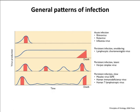Next Monday we'll talk about persistent infections. These are basically infections that stay with you for your life — that's my definition: an infection that stays with you for life. The blue line is virus production.